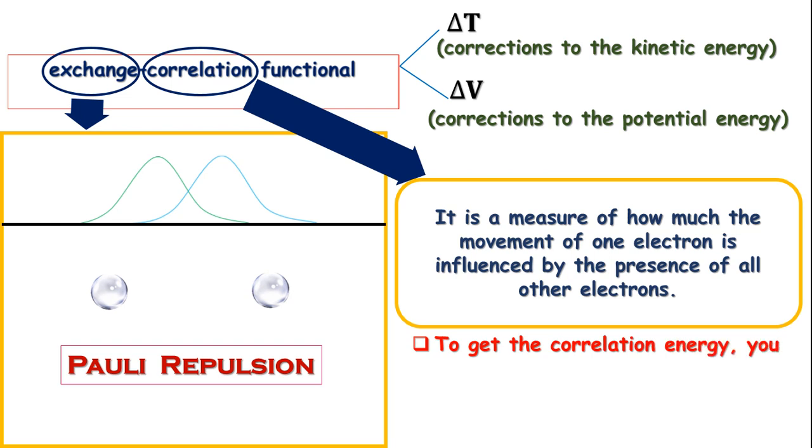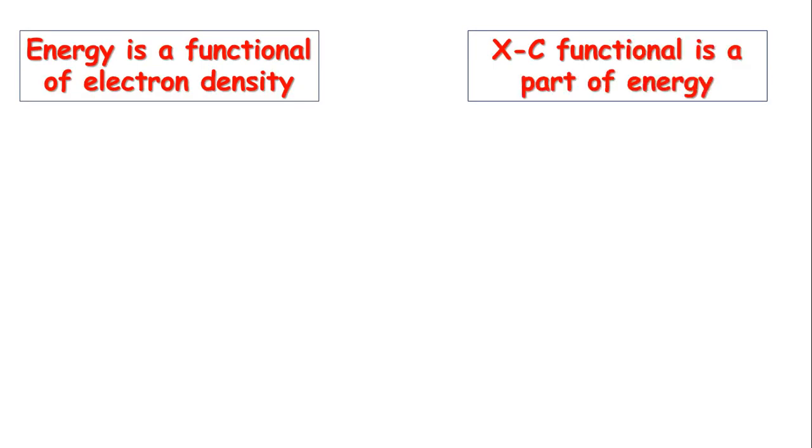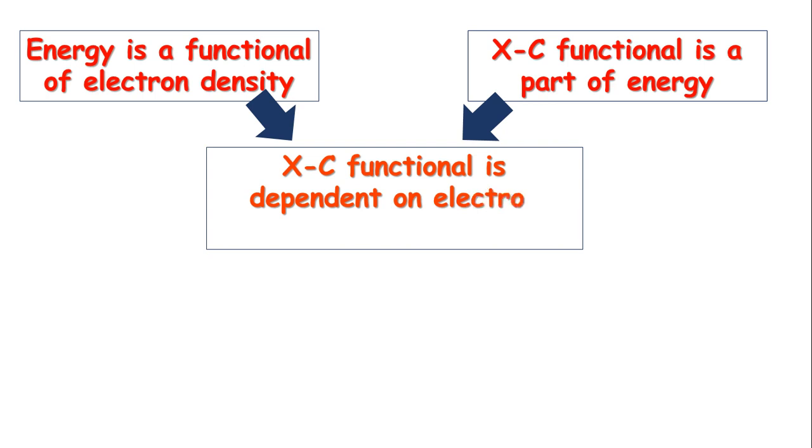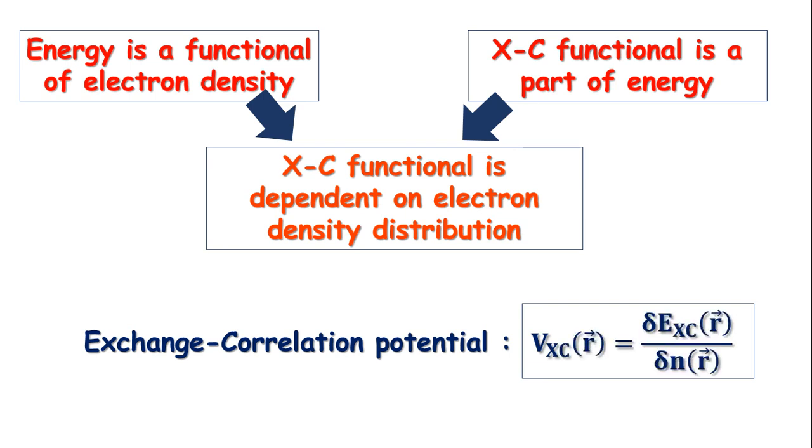Anyway, the analytical calculation of this correlation energy is not possible till now. To get this, you have to calculate the total energy and then subtract the exchange energy from that. So the energy is a functional of electron density, and XC functional is a part of energy, then it's pretty obvious that the XC functional is dependent on electron density distribution. The exchange-correlation potential is given by V_xc equals δE_xc divided by δn, where E_xc is the exchange-correlation energy and V_xc is the exchange-correlation potential at a point r. This is our equation number 2.4.